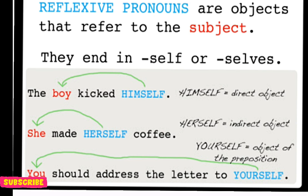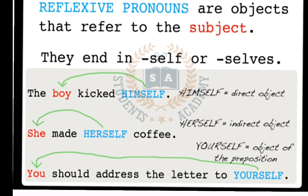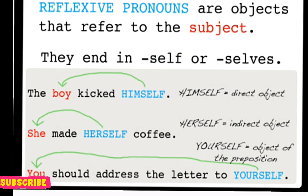Reflexive pronouns میں singular کے لیے ہم use کرتے ہیں: herself، himself، myself، itself۔ لیکن جو plural ہوگا اس کے لیے ہم use کریں گے: ourselves، themselves، selves — یعنی plural میں 'selves' use کریں گے 'self' نہیں۔